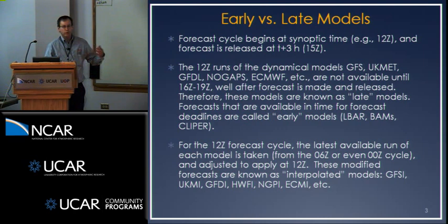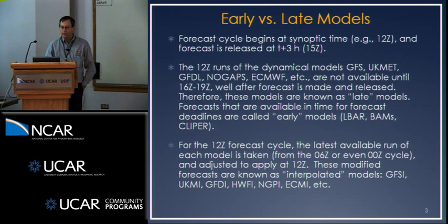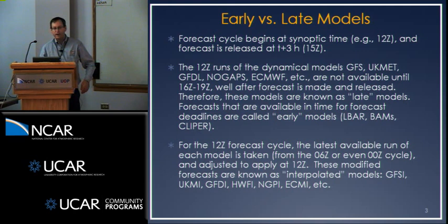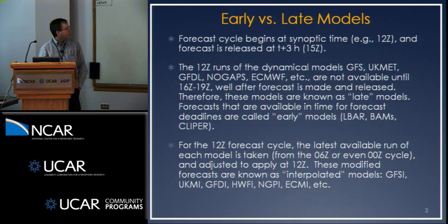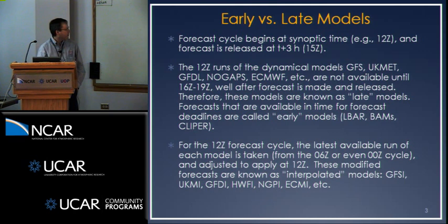That's the notion of early versus late models, and for those of you who aren't involved in the operational end of things, this is really important in terms of whether a model can actually be used by a forecaster. If you imagine the 12Z forecast cycle for the forecast that NHC has to issue at 15Z, the 12Z GFS — for example, 12Z runs of all these models — aren't going to come to the forecaster until after that 15Z forecast goes out. So he can't use those models; they're known as late models. Some models are available in time — we call those the early models, things like LBAR and the BAMs and the statistical models. But there's a process we call interpolation, for historical reasons, where we take the latest available run of the dynamical model — so for the 12Z forecast cycle we go back to 6Z, or if it's a model run twice a day we'd go back to 0Z.